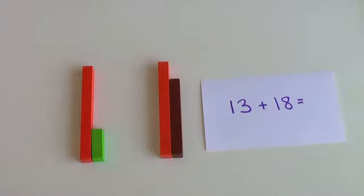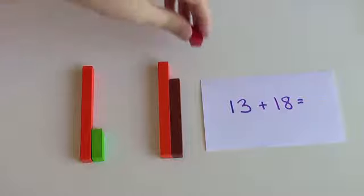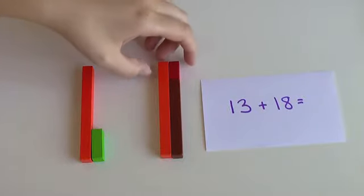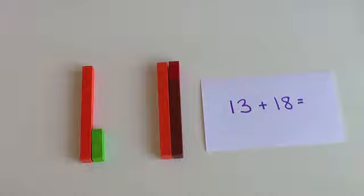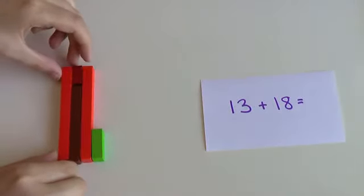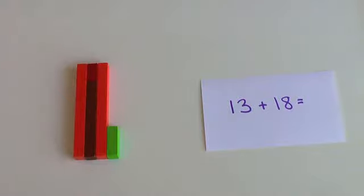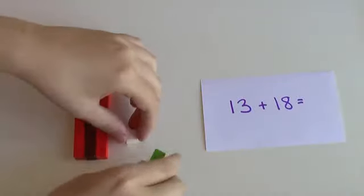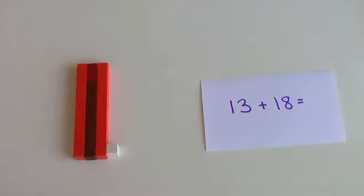13 plus 18, I think I would rather add 13 plus 20. So I'm going to take 2 and add it to 18 and make that 20, because that's nice and easy. 13 plus 20 is 33. But I added the 2 there, so now I have to remember to take it away, and so 33 minus 2 is 31.